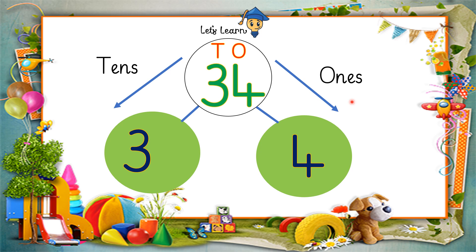But how are we going to write it? As 4 has gone to the 1s side, nothing is left with 3, and 3 is in the 10s. So we are going to place 0 along with 3. So what will it be? 30 and 4 will be 34.